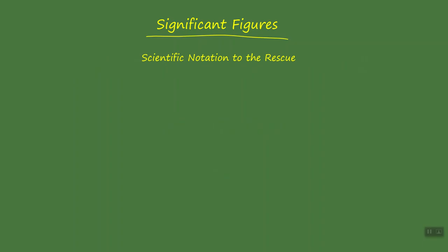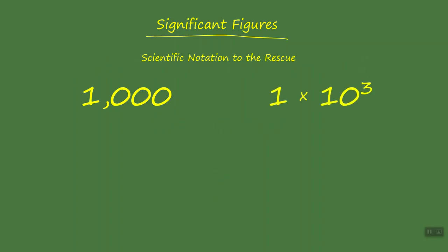That takes us to the use of scientific notation. Let's take a look at the number 1,000. As in the previous example, the number of significant figures is ambiguous. We have a non-zero digit 1 followed by three zeros, and we do not know if they are significant or not. But we can express this number in scientific notation. When we do, we have the coefficient 1. Within the coefficient, we can now express the number of significant figures that we desire. As written here, with coefficient 1, we have one significant figure. But we can add a decimal point followed by zeros, which then become significant.